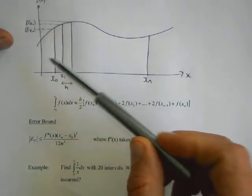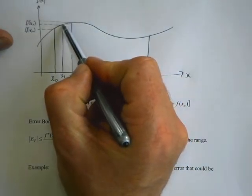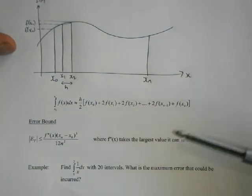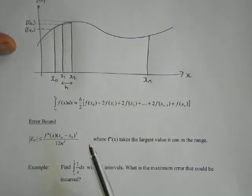We now need the concept of an error bound, which is to say that the value you find by using the trapezium rule is not going to be exact, because the trapeziums don't quite match the curve.